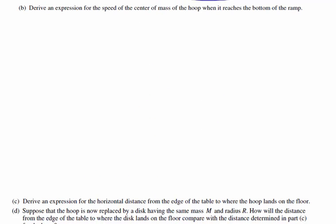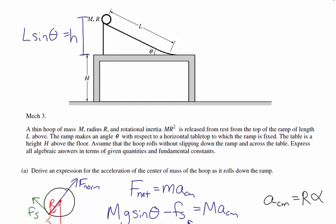The next part asks us to derive an expression for the speed of the center of mass of the hoop when it reaches the bottom of the ramp. I'm going back to the diagram and looking at conservation of energy. The hoop starts at a height H equal to L sine theta. As it rolls down the ramp, it loses potential energy and gains kinetic energy. Because it rolls without slipping, we have two types of kinetic energy: linear kinetic energy due to the motion of the center of mass, and rotational kinetic energy due to its angular velocity.